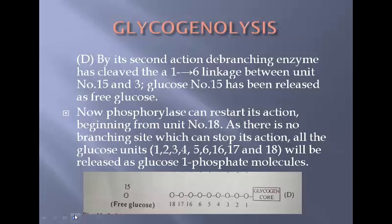Now the action of phosphorylase again starts, and since there is no branching site to stop it, all the remaining glucose moieties — including glucose units 1 through 6 and the attached 3-unit chain (16, 17, 18) — are released, all as glucose-1-phosphate molecules.